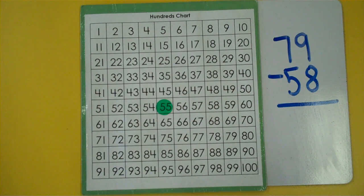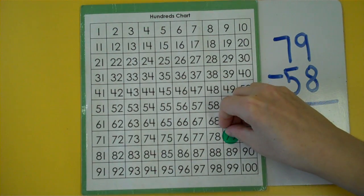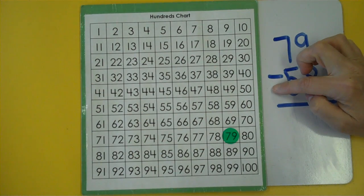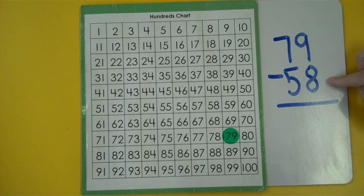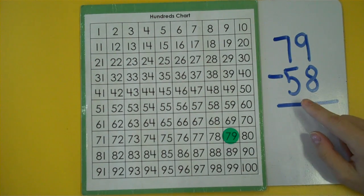Let's try one more. This one looks like it would be quite hard to do, but we know using a hundreds chart is going to make it really easy. So I'm going to start at 79. I'm going to take away 58. So I'm going to skip count back. I have to go up and to the left.